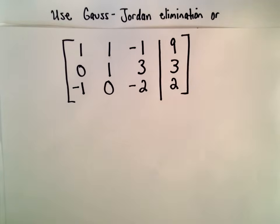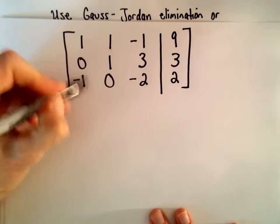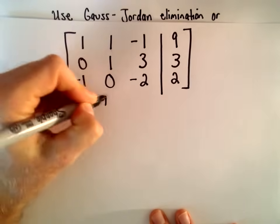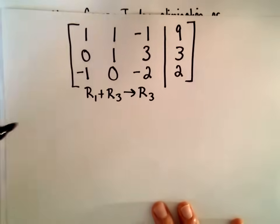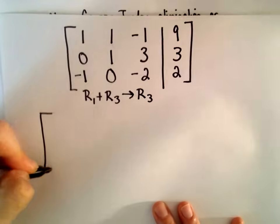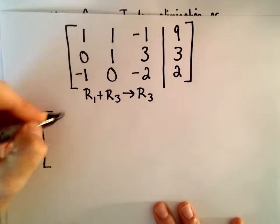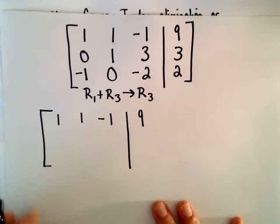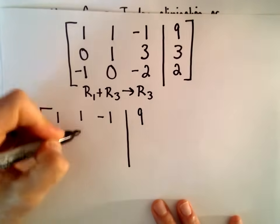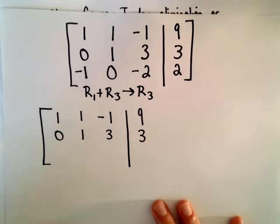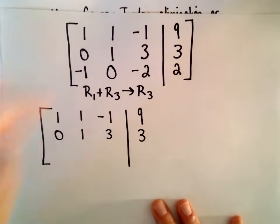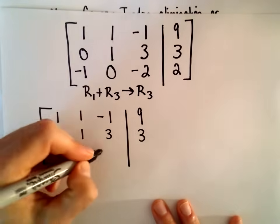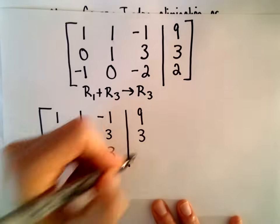So step 1: to get a 0 in the third row, first column, I'm going to take row 1 and add that to row 3, and that's going to replace my row 3. I'm not changing the first or second row. Doing the arithmetic: 1 plus negative 1 is 0 — that's what we wanted. 1 plus 0 is 1. Negative 1 plus negative 2 is negative 3. And 9 plus 2 is positive 11.